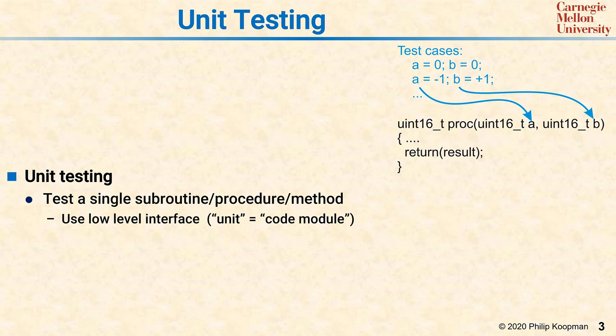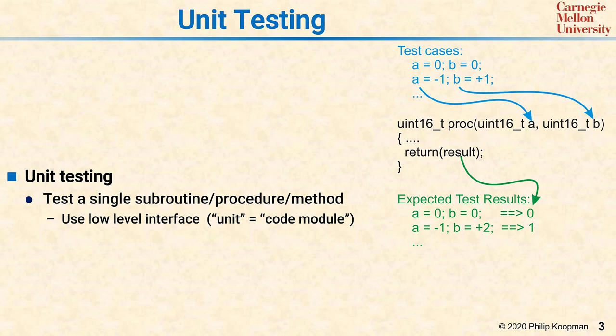The results of a unit test are checked against some oracle, something that says this is what it should be. For this function, the two inputs being zero is supposed to result in zero, and negative one and plus two are supposed to result in plus one. If those results match the expected values, then the unit test passes.